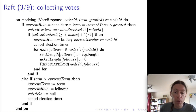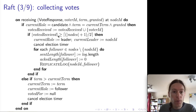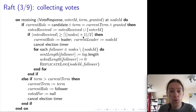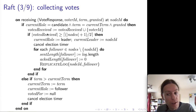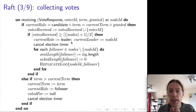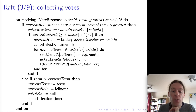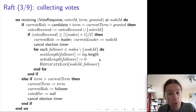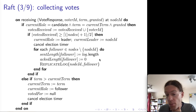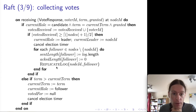To determine whether we have a quorum, we check the cardinality of the votes received set. If the number of votes is greater than or equal to a majority — that is, the number of nodes plus one divided by two, rounded up — then we have a majority quorum and can become the leader. We transition to leader state, set currentLeader to ourselves, cancel the election timer, and send a message to all followers to tell them we're the new leader by calling the replicateLog function.